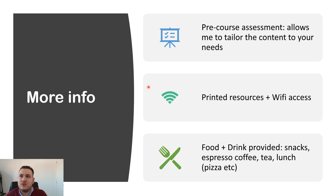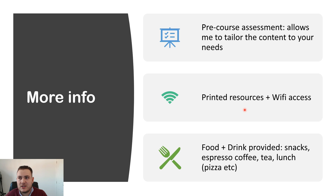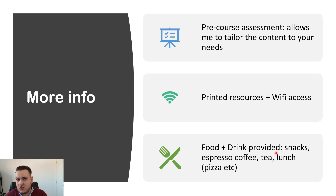Before the course there'll be an assessment that you can take and I'll be able to tailor the content of the course to your needs, studying some of the stuff you got wrong on this pre-course assessment. On the day you'll be given printed resources, and some resources will be accessible via the internet so there'll be Wi-Fi access on premises. There'll be food and drink provided too — snacks, coffee, tea and lunch — but if you want to bring your own that's fine as well.